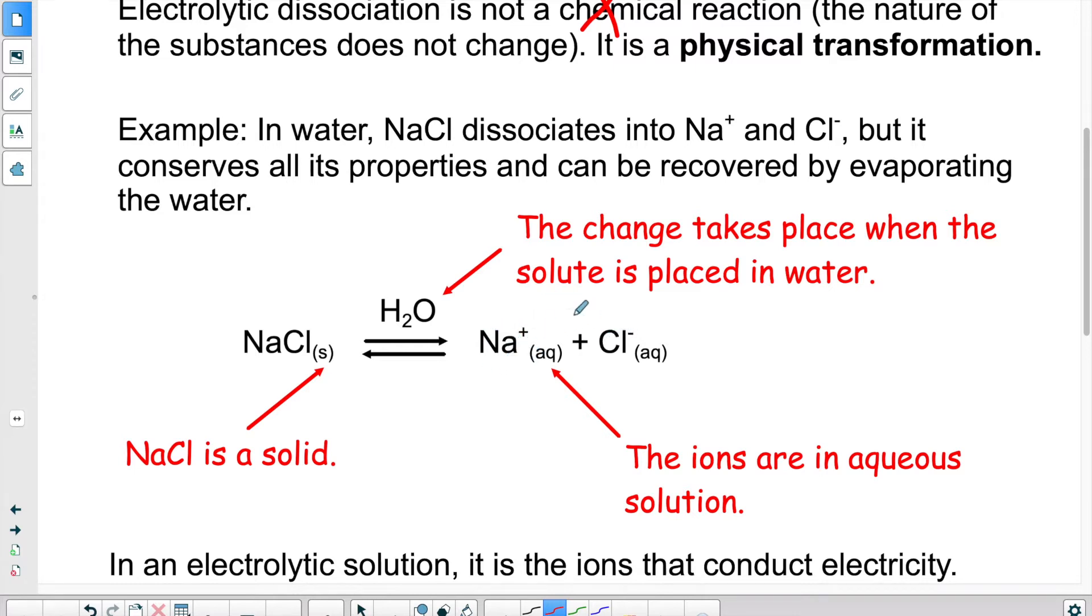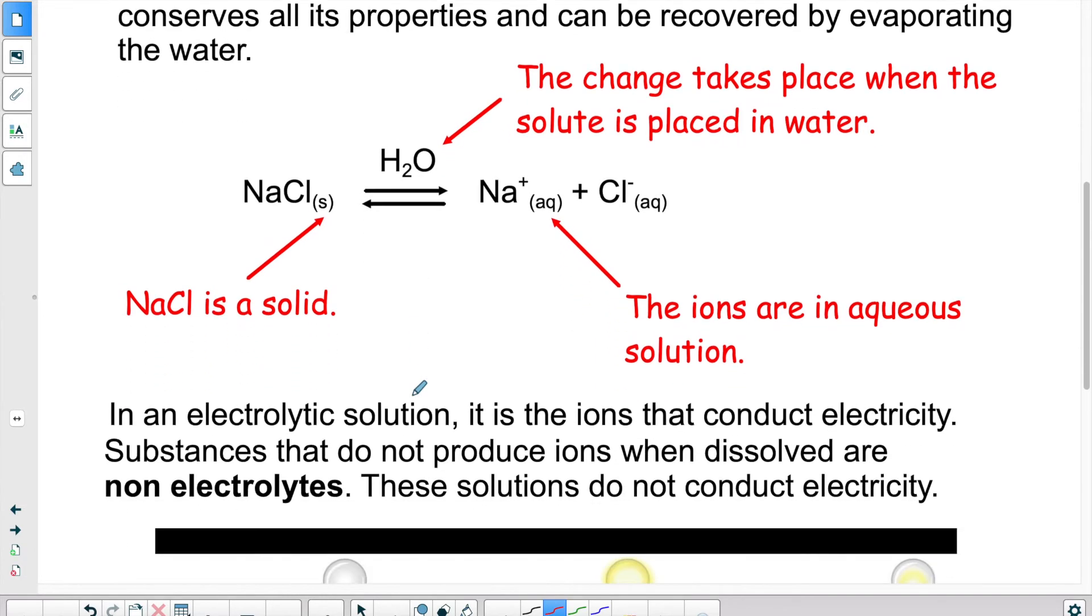So NaCl put in water forms Na plus Cl minus. If we were to let the water evaporate, these two would attract each other, recombine to form NaCl solid.